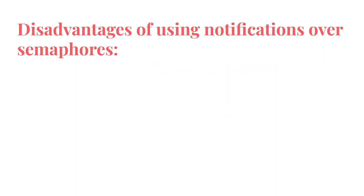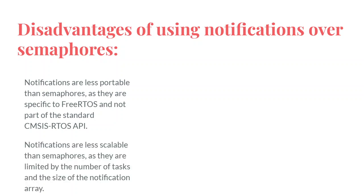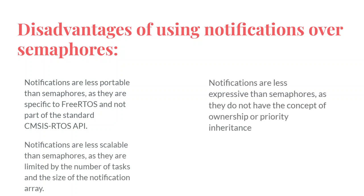There are some disadvantages of using notifications as well. Notifications are less portable — if you are using them in FreeRTOS, they are not part of the standard CMSIS-RTOS API. Notifications are less scalable: when you want to scale them, unlike semaphores, you can't do that easily, as they are limited by the number of tasks and the size of the notification array. Also, notifications are less expensive than semaphores because they do not have the concept of ownership or priority inheritance.